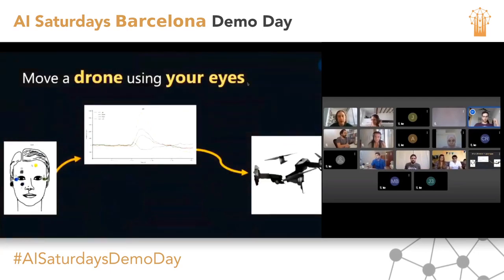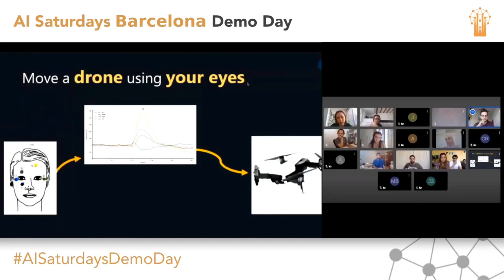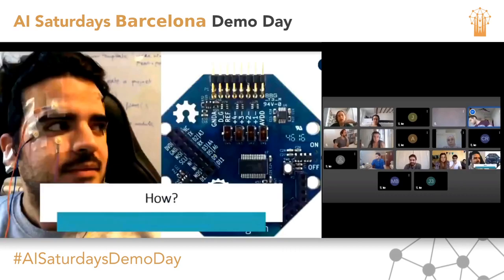Our idea was to move a drone using our eyes. We found a paper with a structure where you place electrodes up, down, left, and right of the eyes, with a reference electrode. The kind of signals we can achieve depend on the direction we move our eyes. With these signals, we intend to move the drone in the same direction. Our idea is to use an OpenBCI system. We placed the electrodes in the face, as shown in the picture.